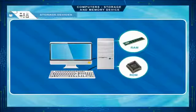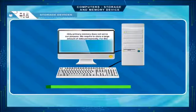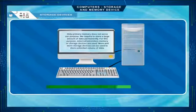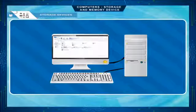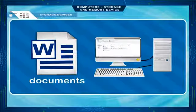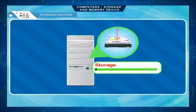Primary memory is small in size but faster than secondary memory. When we work on our computer, the work is saved in primary memory. Only when we give the save command to save our file with a name is the file saved on secondary memory.